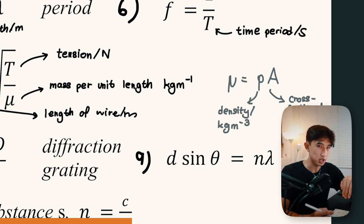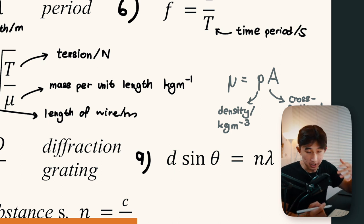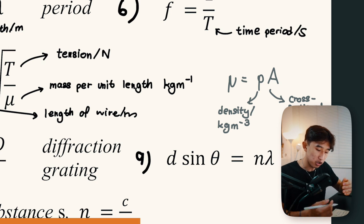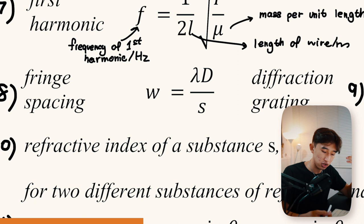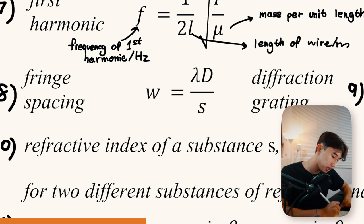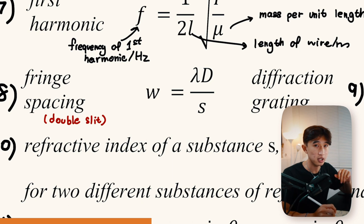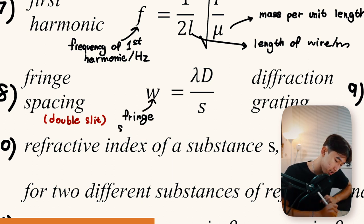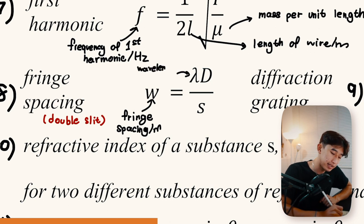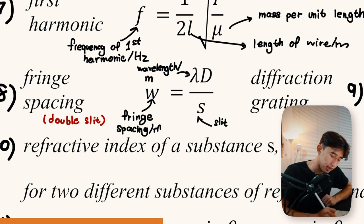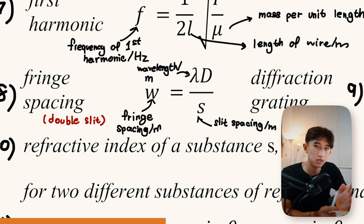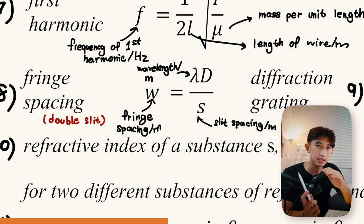Fringe spacing for double slit: w = λD/s, where w is the fringe spacing in metres, λ is the wavelength of incident light in metres, s is the slit separation (distance between the two slits — not the length of the slit), and D is the distance between the slits and the screen in metres. Be careful: s is the separation between slits, which is distinct from the slit length.